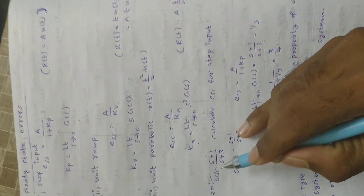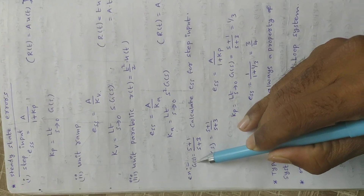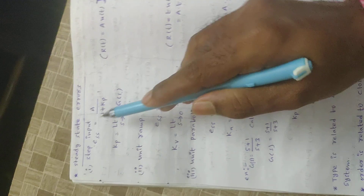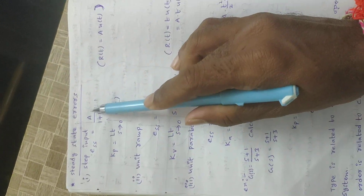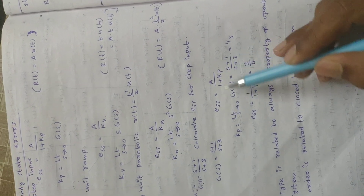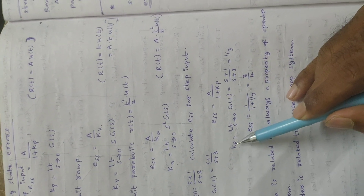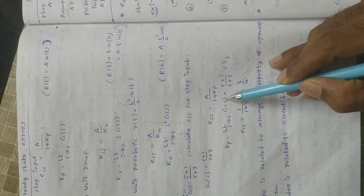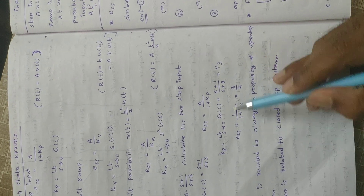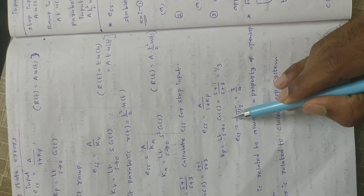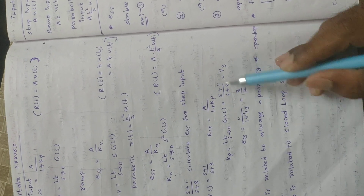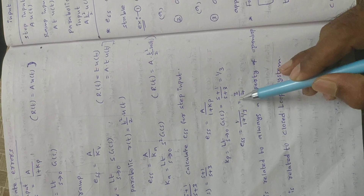Let us solve a problem. Given G of s equals s plus 1 by s plus 3, calculate the error for step input. The formula is ess equals a by 1 plus Kp. First, calculate Kp: limit s tends to 0 of G of s equals 1 by 3. For a unit step input, a equals 1, so ess equals 1 by 1 plus 1 by 3, which gives 3 by 4.